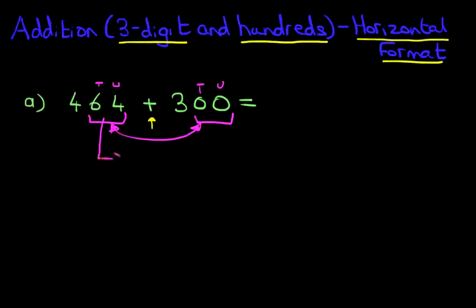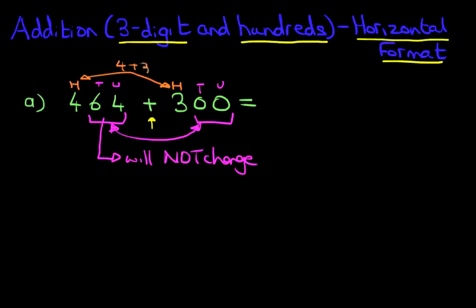So therefore this number, 64, will not change. So we can write that in, but we won't write it just yet. As for the hundreds, well we're adding 300, so that will change. So it's 4 plus 3 equals 7. So 464 plus 300 is 764. Now notice that the 64 did not change. Only the 100 went from 4 to 7 because we added 3.